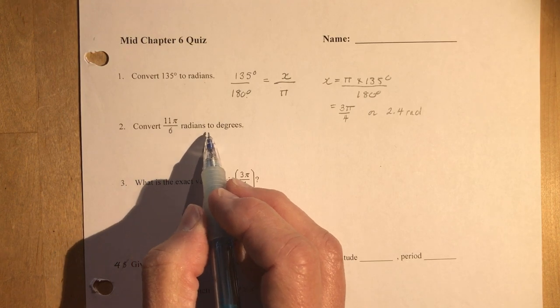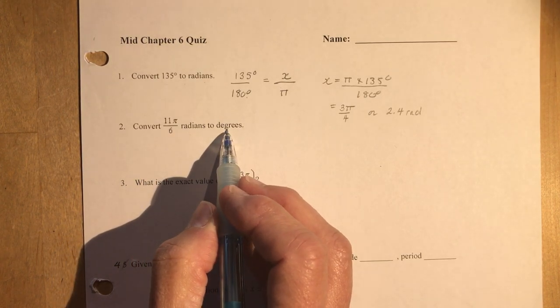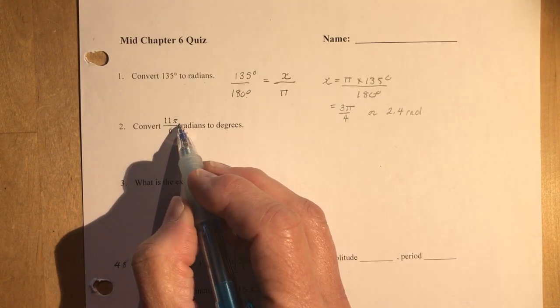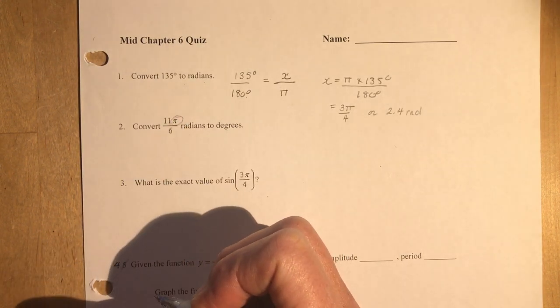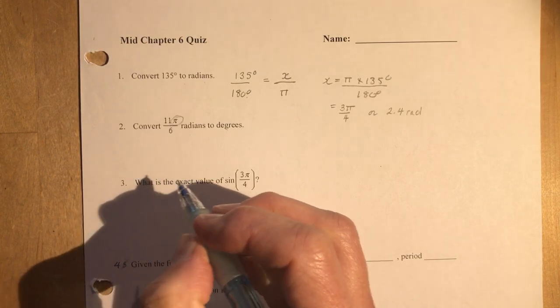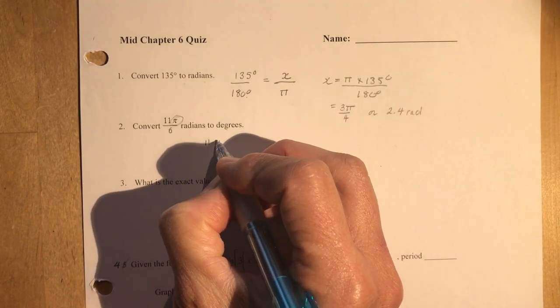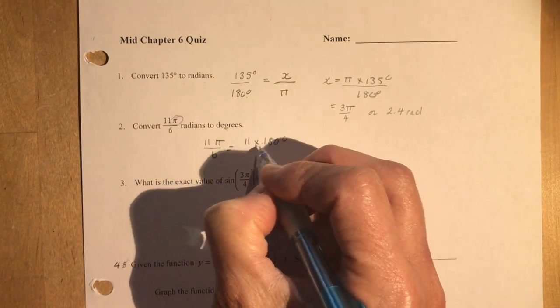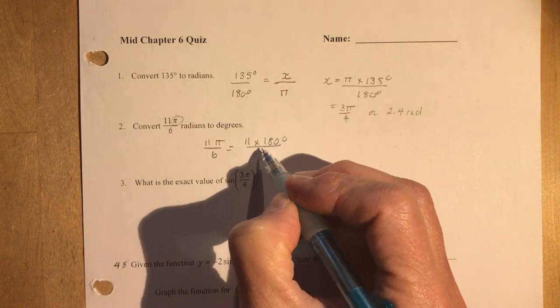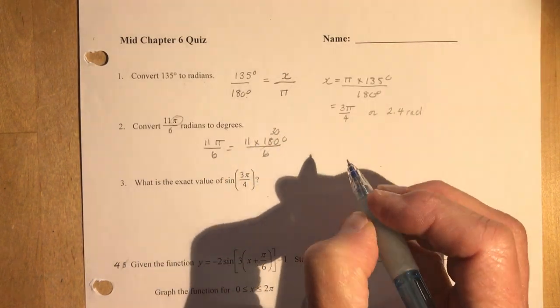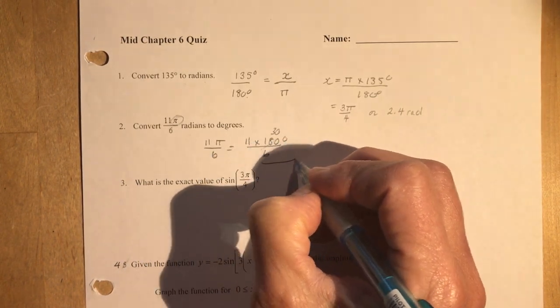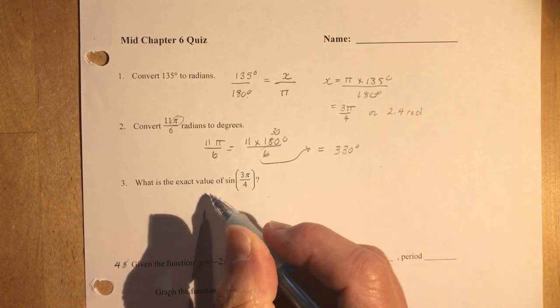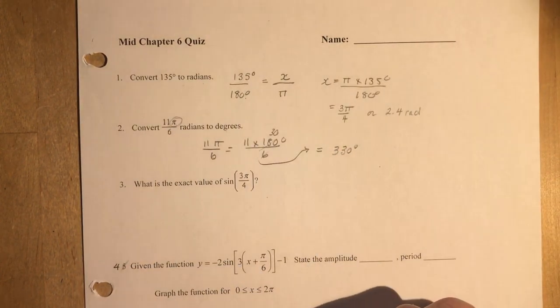Okay, convert 11 pi over 6 radians to degrees. So you can do the same thing by making a ratio, or you can just substitute in 180 degrees here for pi and solve. That's what I would do. So 11 pi over 6 is the same thing as 11 times 180 degrees over 6, and that would give you 30 here, and 30 times 11. I didn't leave enough room here to write all this out, did I. So it's 330 degrees. That's always the easiest way when you have the pi. Pi is 180 degrees.